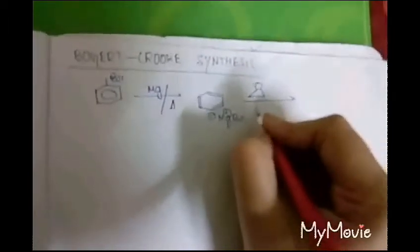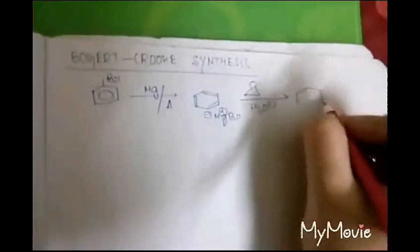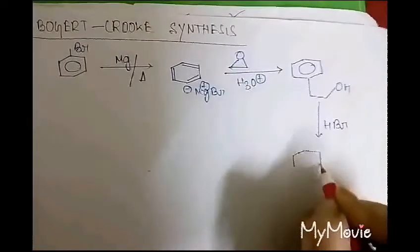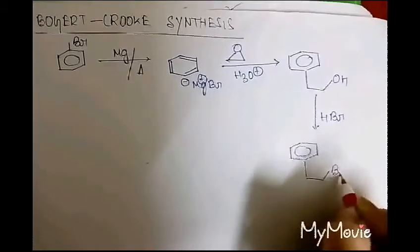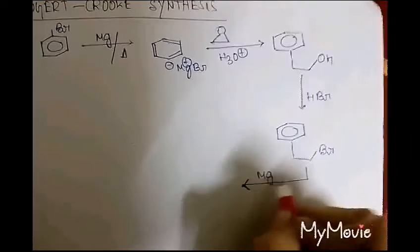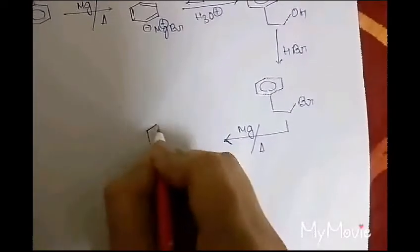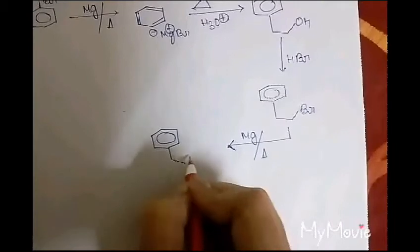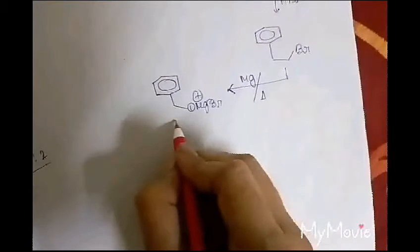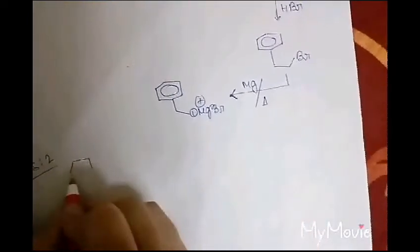The difference here is that beta-phenylethyl bromide will then react again with magnesium to form another Grignard reagent, giving phenyl-CH2CH2-MgBr.